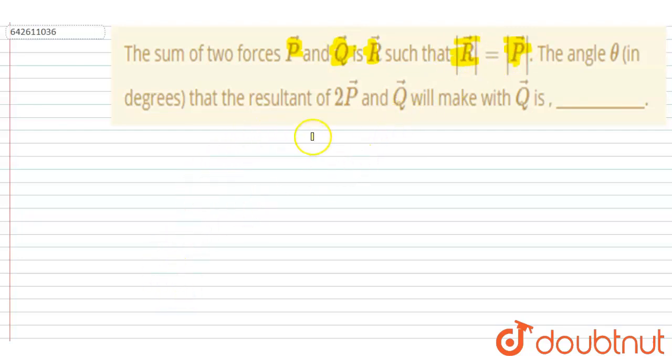The angle that the resultant of 2P vector and Q vector make with Q vector. Very simple.